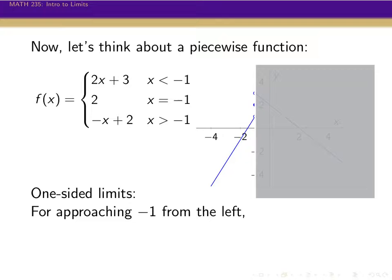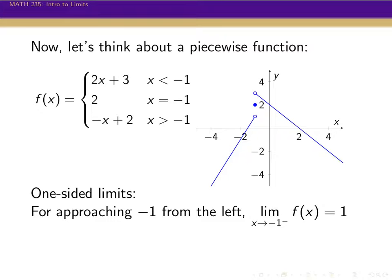All we're thinking about is what's happening as we go to minus 1 from the left. As you can see, we're traveling up this line, and it's going to a y-value of 1. To say that this value as we approach from the left goes to 1, we write the limit as x goes to minus 1 with a minus sign superscript. This minus sign says we are only approaching from the left — using numbers that are less than minus 1. So as we go to minus 1 from the left, the function is approaching 1.